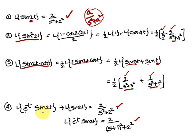Similarly, Laplace of e^(-t)·sin(2t). First find Laplace of sin(2t), which is 2/(s² + 4). Then for Laplace of e^(-t)·sin(2t), replace s with (s + 1) to get the answer.